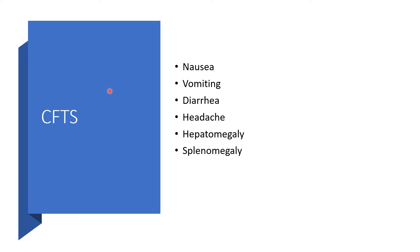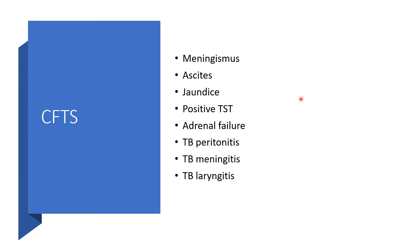It depends on the organs affected. Since Miliary TB would have spread far away, there may be nausea, vomiting, diarrhea. There may be headache when the brain is involved. When the liver is involved, hepatomegaly. When the spleen is involved, splenomegaly. There may be meningismus — a state of meningeal irritation — with neck stiffness, rigidity, and photophobia. Ascites and jaundice when the liver is involved. Positive tuberculin skin test. Adrenal failure when the adrenal gland is involved. TB peritonitis, TB meningitis, TB laryngitis — it's just spreading everywhere.